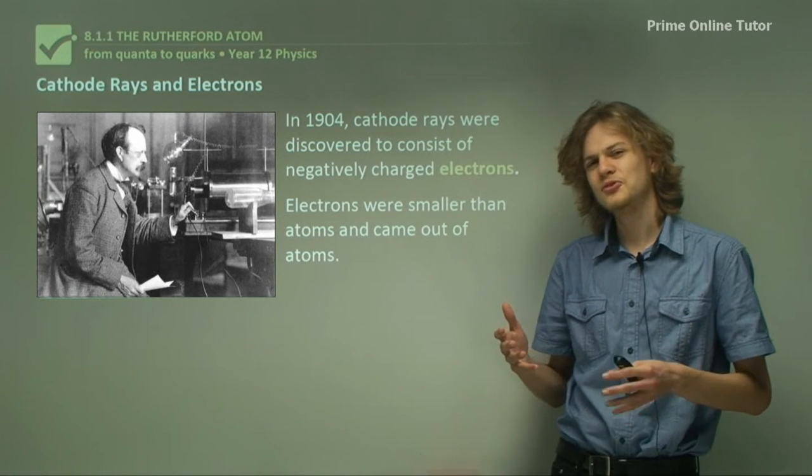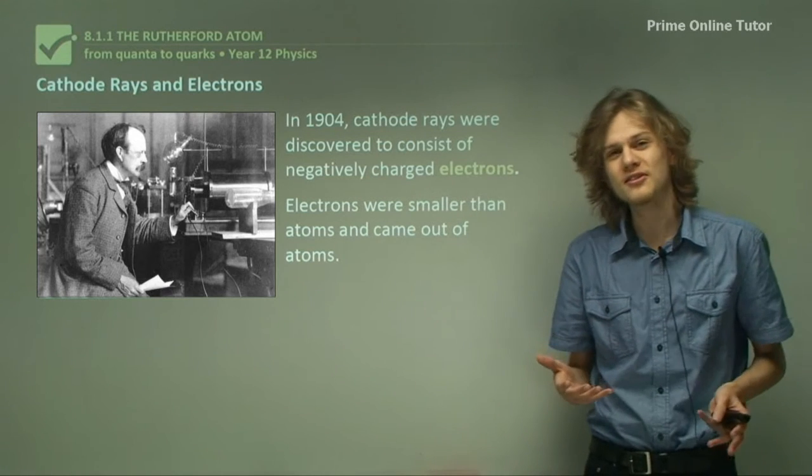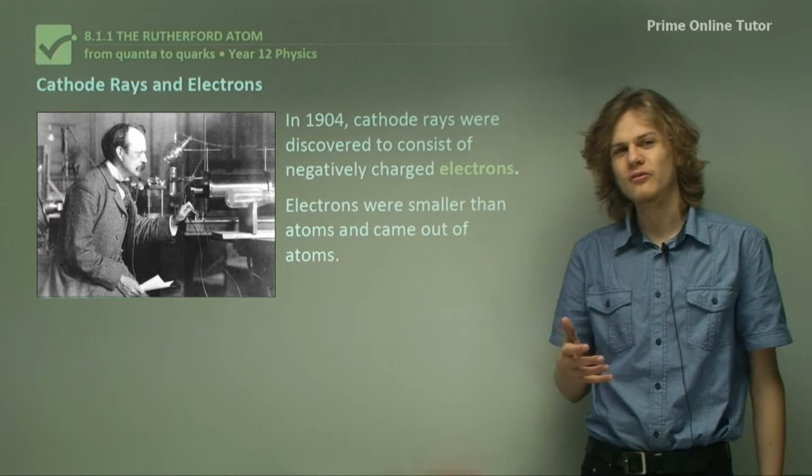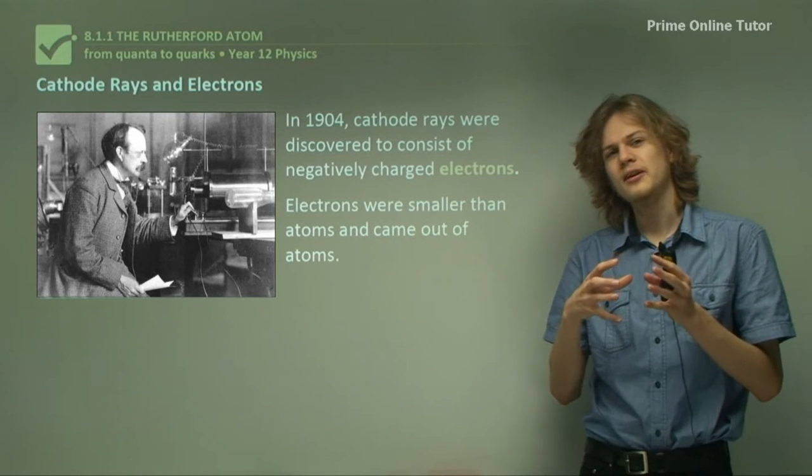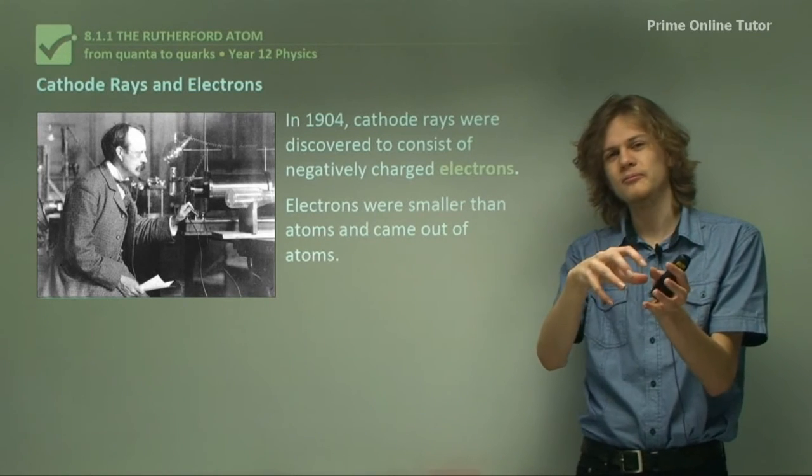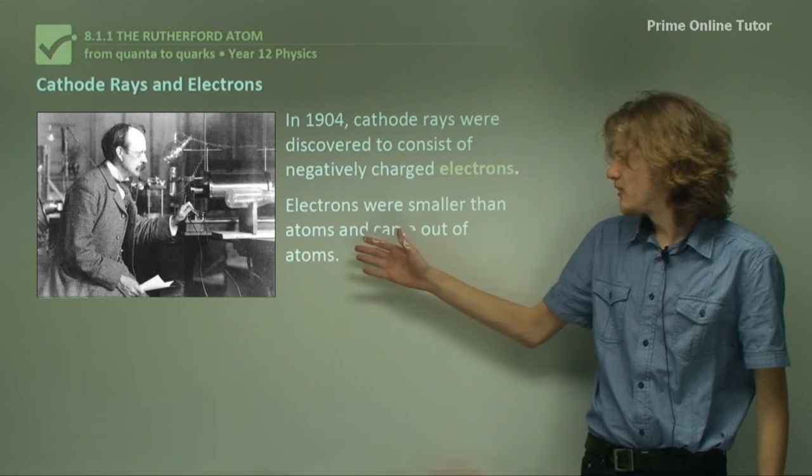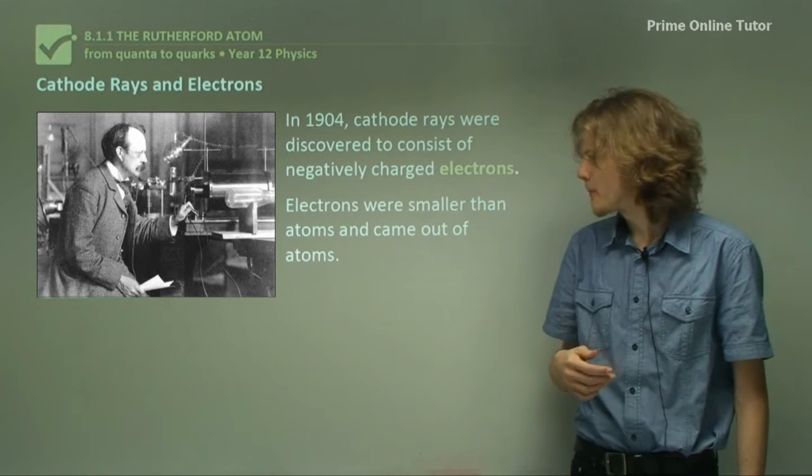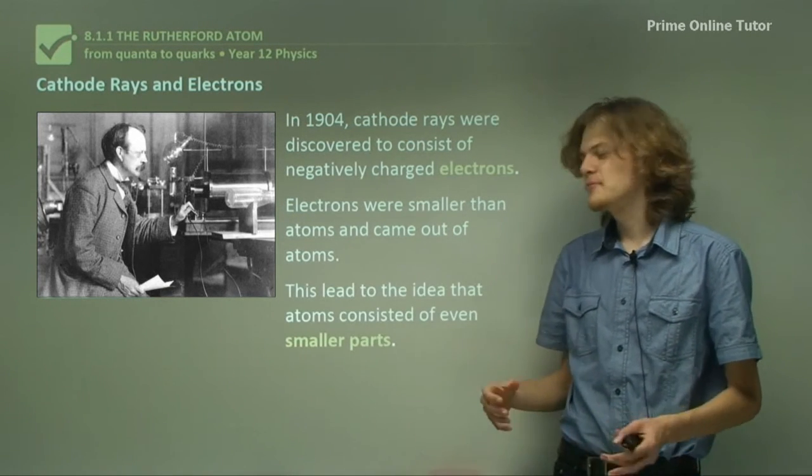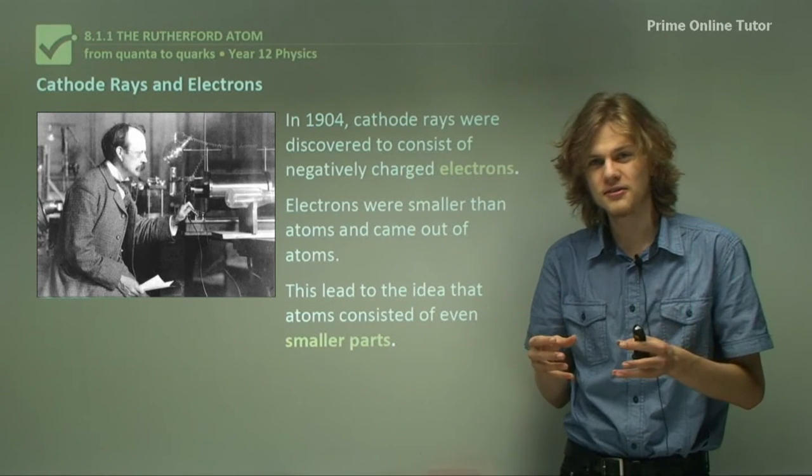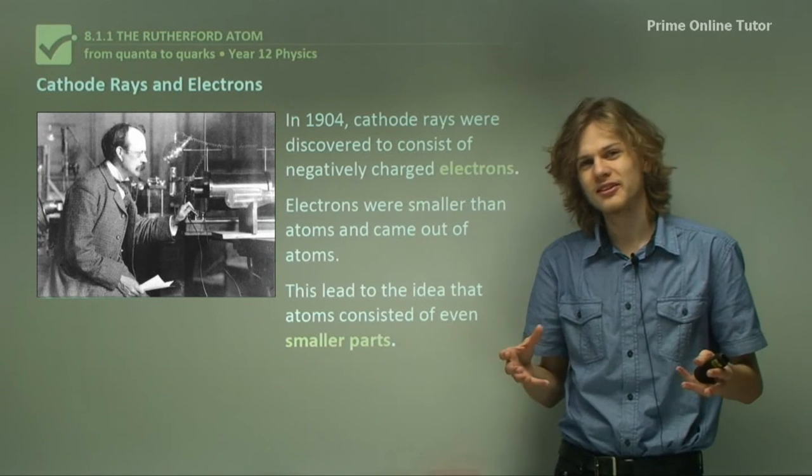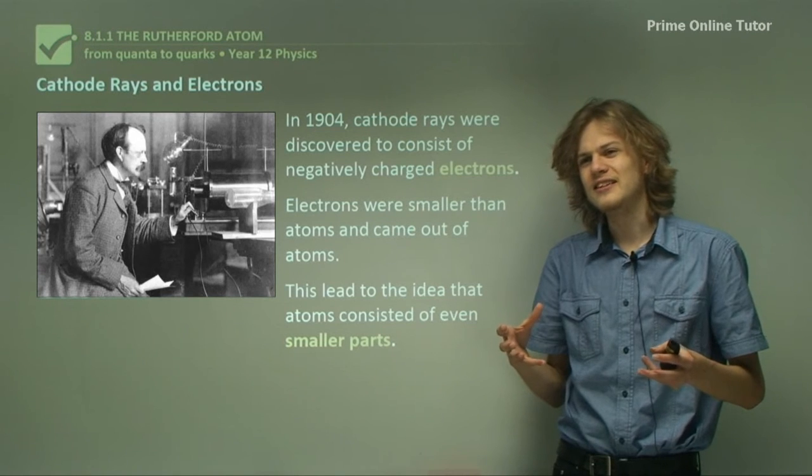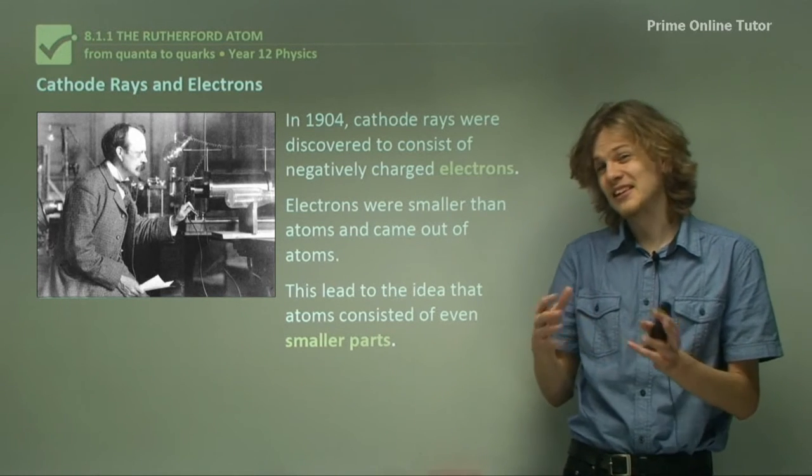So J.J. Thompson had to figure out a way to explain this in terms of the model. The model at that point was that atoms were completely indivisible and that they were a single unit. But the fact that electrons were smaller than atoms and came out of atoms suggested something quite different. And this led to the idea that atoms consisted of smaller parts, parts that were subatomic. And it sort of makes the term atom, indivisible, a little bit misleading.